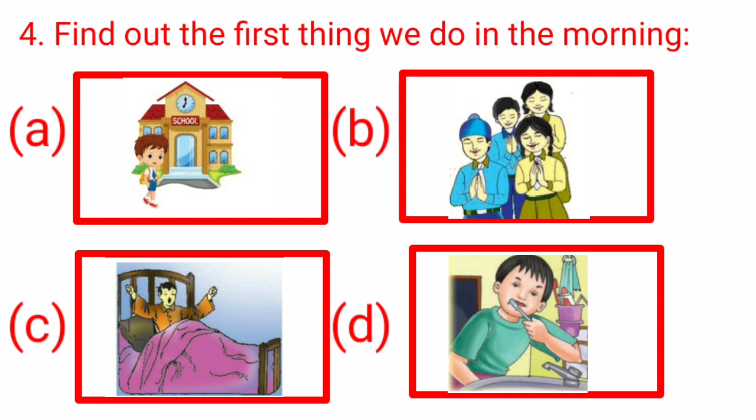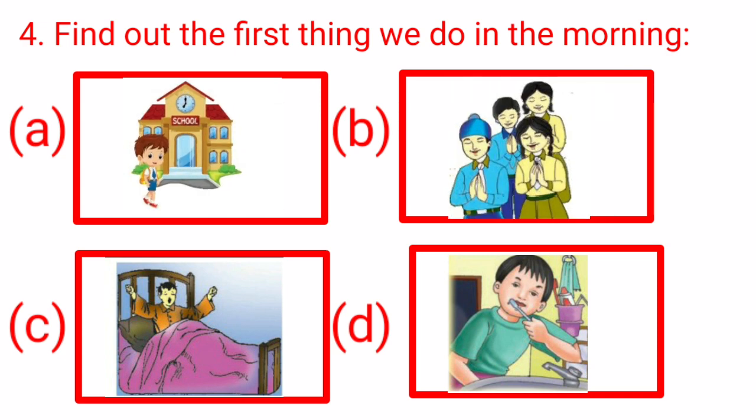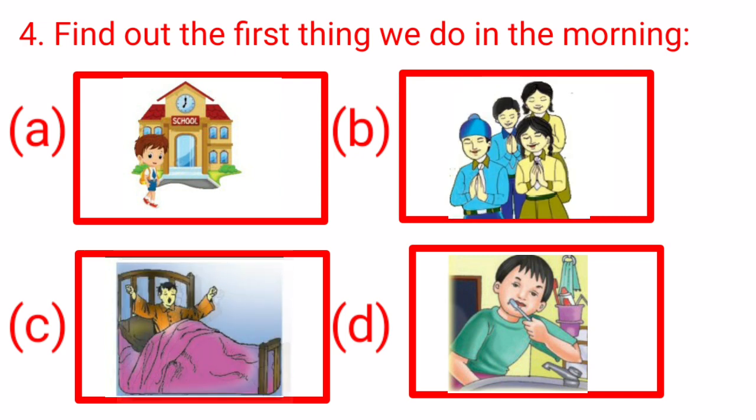In option A, we can see the activities going to school. In option B, the activity is morning assembly. In option C, the activity is waking up in the morning. And in option D, the activity is brushing teeth.